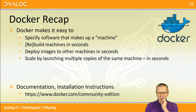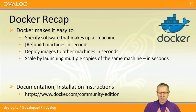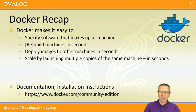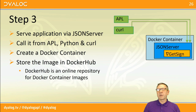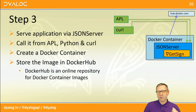The main advantages of Docker: it makes it really easy to specify how to build a machine, it will build and rebuild when you have changes to your code in seconds, it'll deploy images to other machines in seconds, and you can scale by launching multiple copies of the same machine also in seconds. Docker.com has a community edition you can download for free. The next step is uploading to Docker Hub at hub.docker.com.